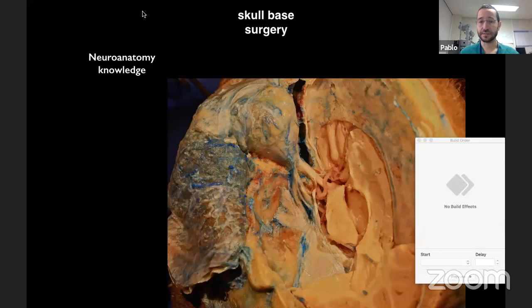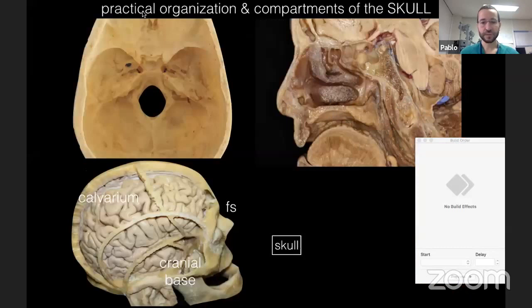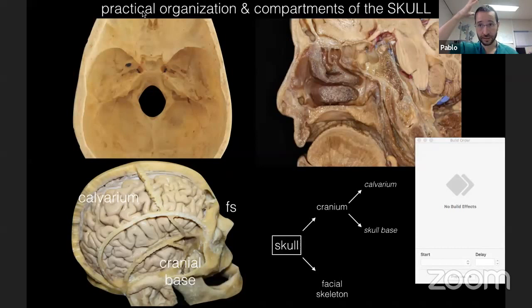Once we study neuroanatomy, we can study the individual case and plan optimal surgical planning, which is theoretically going to lead us to a better surgical result. When talking about the skull, we can divide it in two parts: the cranium and the facial skeleton. About the cranium, we have the calvarium, which is the upper part, and the skull base, which can be divided into endo and exocranium. Both of these sites are connected to the nasal cavity, orbit, infratemporal and infrapetrosal fossae through fissures and canals.